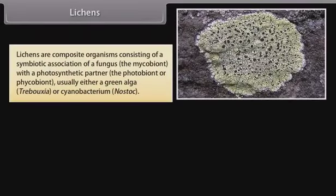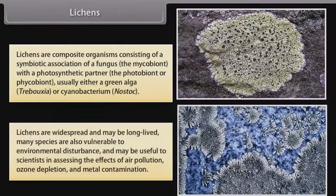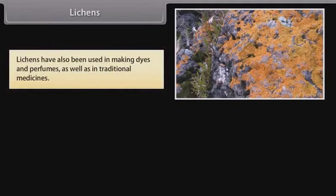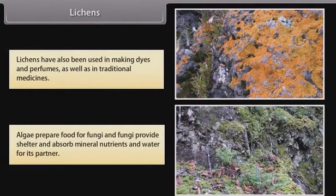Lichens are composite organisms consisting of a symbiotic association of a fungus — the mycobiont — with a photosynthetic partner, the photobiont or phycobiont, usually either a green algae (Trebouxia) or a cyanobacterium (Nostoc). Lichens are widespread and may be long-lived. Many species are also vulnerable to environmental disturbance and may be useful to scientists in assessing the effects of air pollution, ozone depletion, and metal contamination. Lichens have also been used in making dyes and perfumes, as well as in traditional medicines.